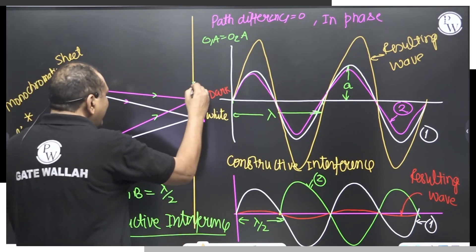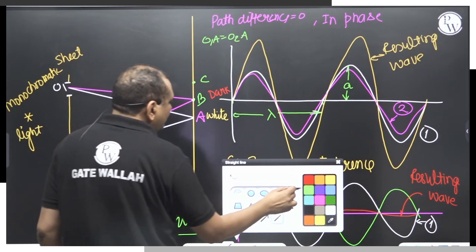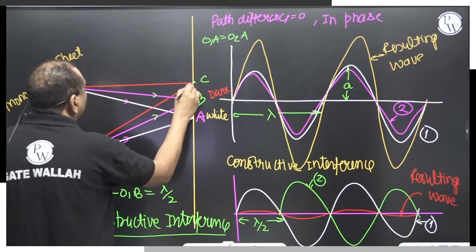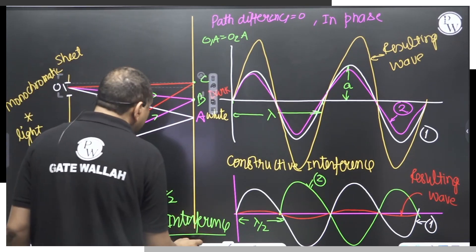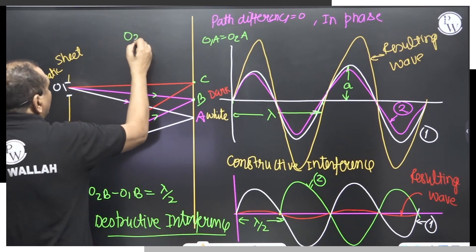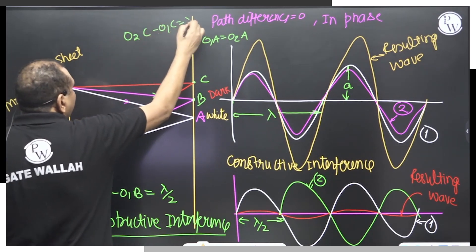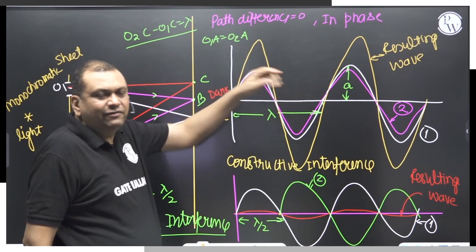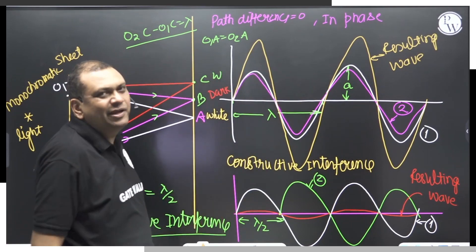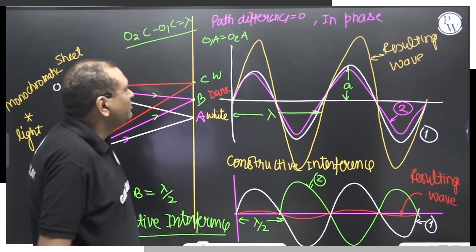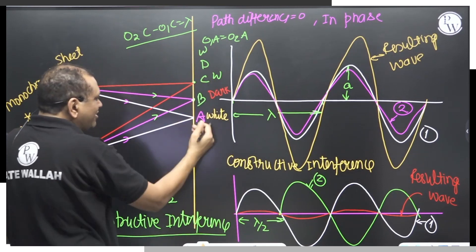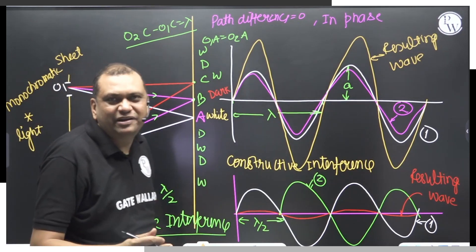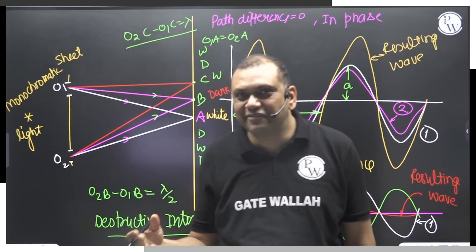At point C, if it so happens that O2C minus O1C equals lambda, then with path difference equal to lambda there will again be constructive interference and a white band will appear on the screen. At 3 lambda by 2 it will be dark, then white — similarly on both sides you get a fringe pattern: white, dark, white, dark, white.